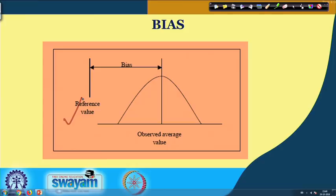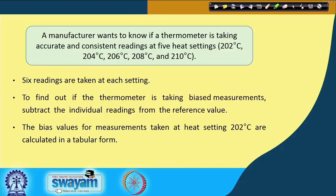In the figure, you can see the reference value and the observed average value. There is some spread, and the bias is the difference between the reference value and the observed average value.